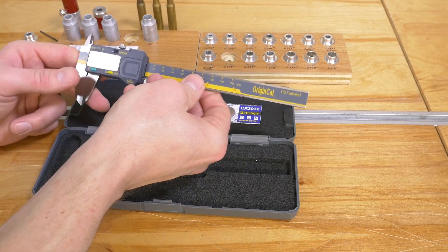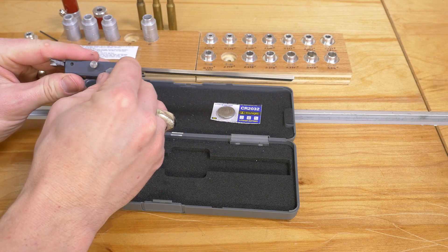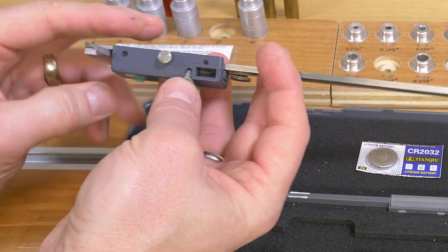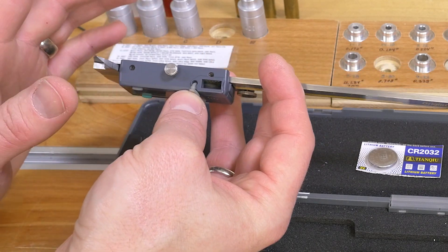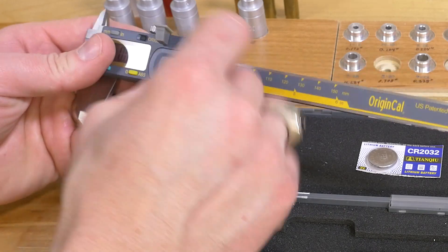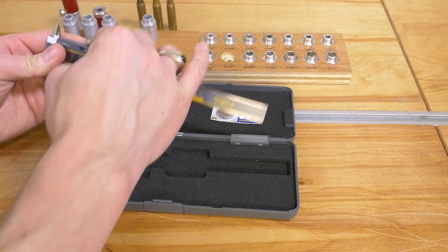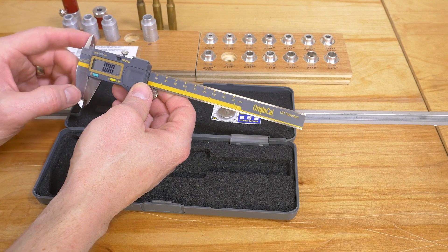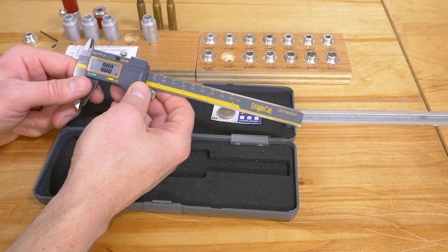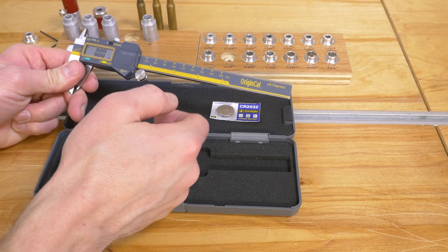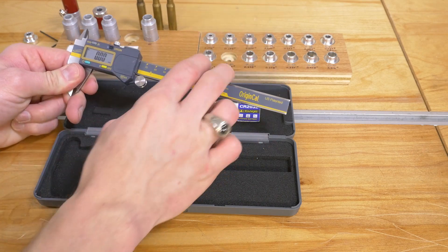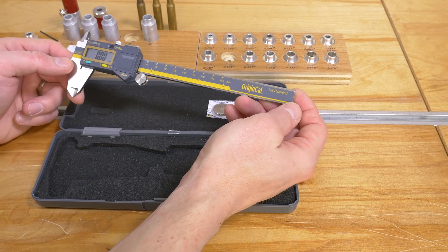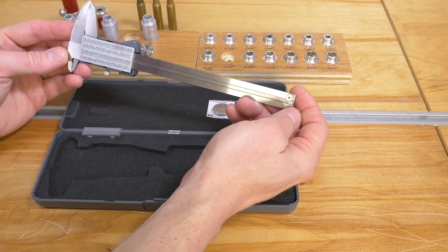We've also got a data port. This is nice. The Mitutoyo cables evidently work with this unit. I haven't tested that. iGaging sells a data interface where you can connect this to a PC, for instance, and have a USB connectivity feature where you hit a button, add a measurement, and it will import it into, say, a spreadsheet, for example. So that's a basic tour of the calipers. Let's see them in action.